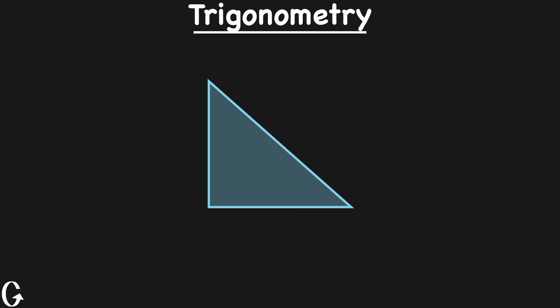Let's talk about the important right triangle trigonometry concepts for physics. So this is a right triangle, and it's a right triangle because one of the angles of this triangle is exactly 90 degrees.